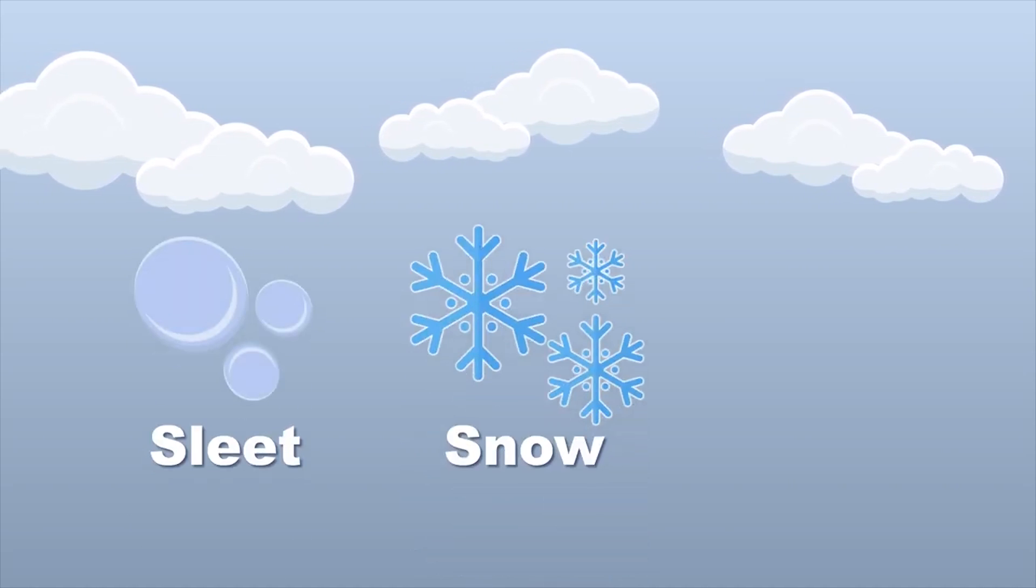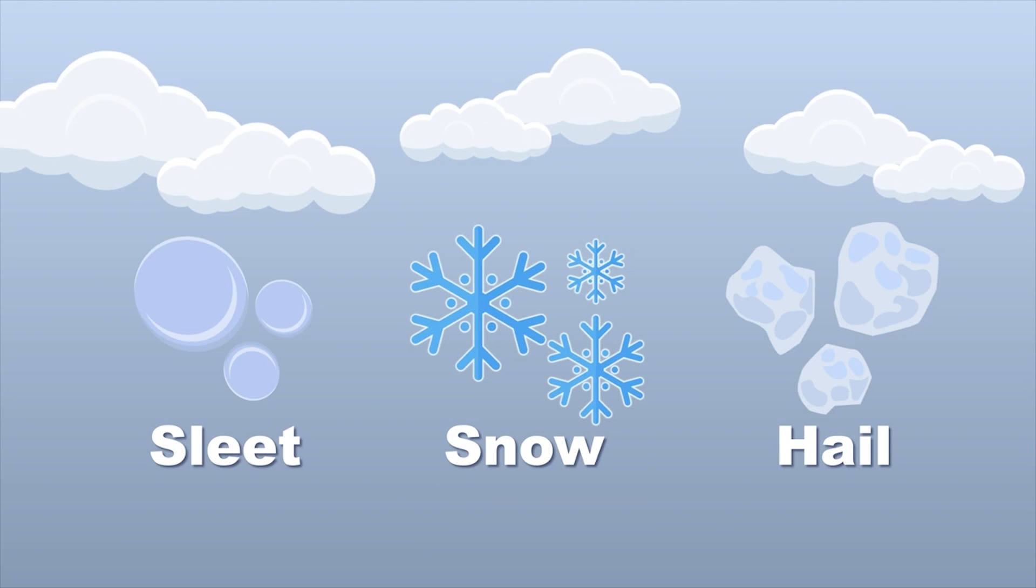Sleet versus snow versus hail. Let's look at what makes them different with this frozen tale. Sleet, snow, and hail are forms of frozen water precipitation, but each is distinct when it comes to its formation.